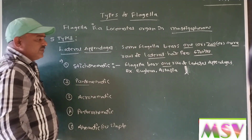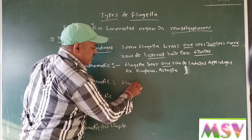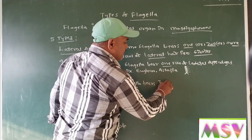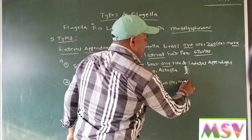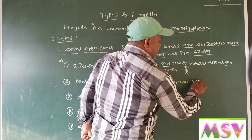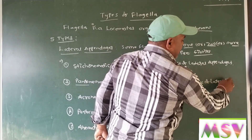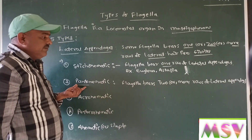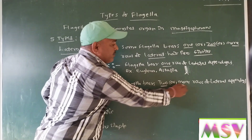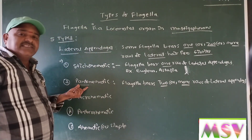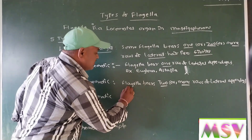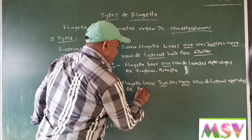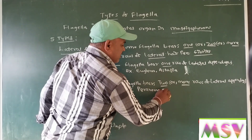Second, pantonemotic. The flagella bears two or many rows of lateral appendages — it is called pantonemotic. Examples: Peranema and Monas.